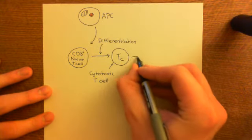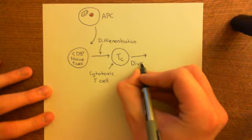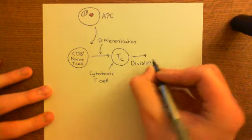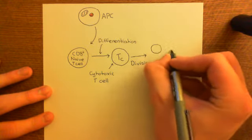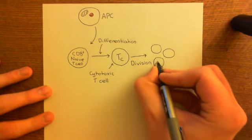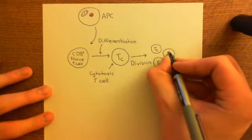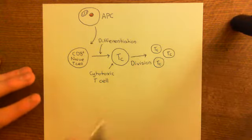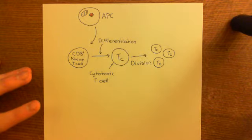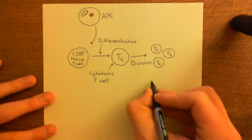This cytotoxic T cell will then divide, and it will become many cytotoxic T cells — thousands, if not millions. These cytotoxic T cells will go into the blood, leave the lymph node, and look for other cells all around the body which have this intracellular pathogen.